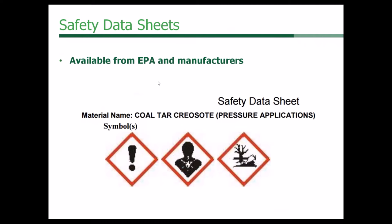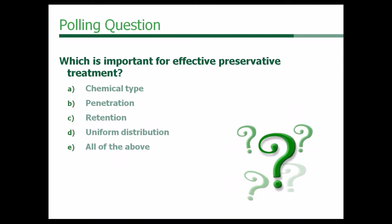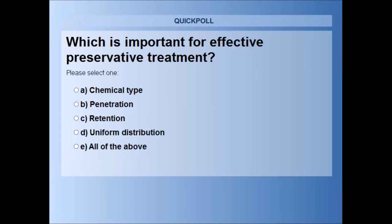Safety data sheets are available from the EPA and manufacturers. Anytime we're talking about the types of preservatives used to prevent mold and termites, these could potentially have some effect on human health. These symbols on safety data sheets have different meanings — for example, one in the middle has to do with folks with respiratory conditions. Take a look at the safety data sheets as well.